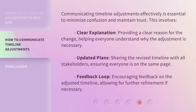Communicating timeline adjustments effectively is essential to minimize confusion and maintain trust. This involves clear explanation, providing a clear reason for the change, helping everyone understand why the adjustment is necessary. Updated Plans: sharing the revised timeline with all stakeholders, ensuring everyone is on the same page. Feedback Loop: encouraging feedback on the adjusted timeline, allowing for further refinement if necessary.